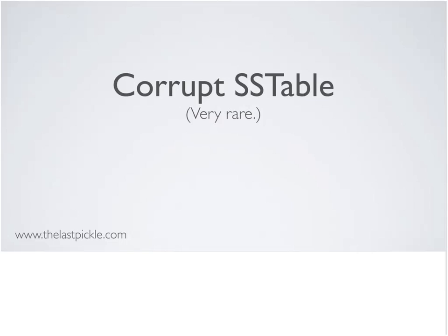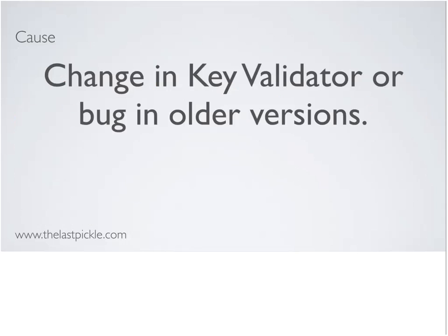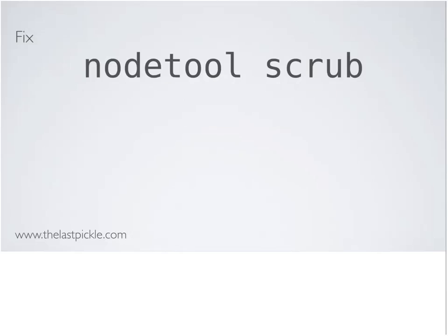A corrupt SSTable is very rare nowadays in modern Cassandra, but it might look like this in compaction logs: 'the last key written was greater than the previous one' — the keys are out of order. This could happen if you change your key validator, for example switching from integer to string in the Thrift API, changing the key ordering. Occasionally there were bugs in older versions. But we know these files on disk are immutable, so NodeTool scrub reads each SSTable and writes it out into a new SSTable, fixing errors as it goes.